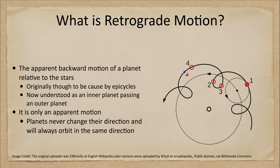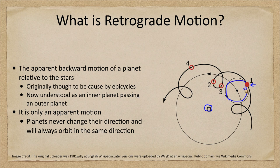We looked at something like this to explain retrograde motion, and it works very well. You have the Earth at the center, and the planet orbiting here in red. The planet does not orbit around the main orbit — it orbits on a smaller circle called an epicycle. That epicycle moves around in a circle, so the planet goes around while the center of that circle moves around the Earth, giving us that kind of loop in the sky.